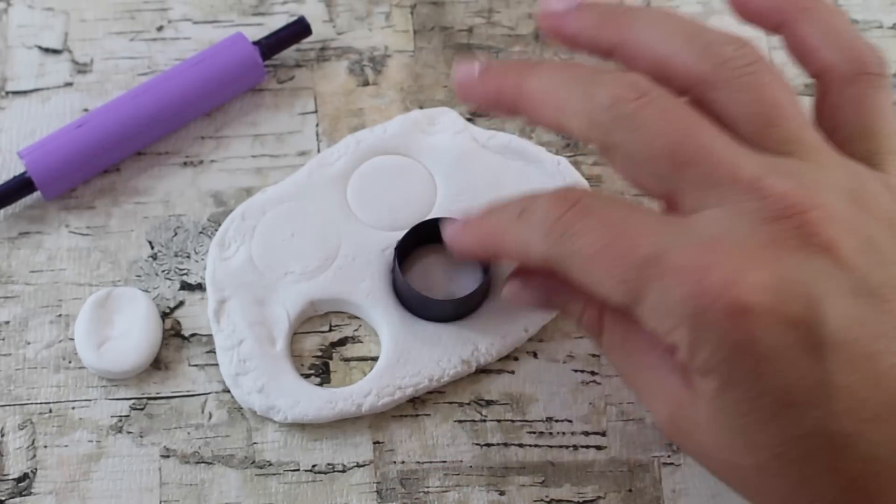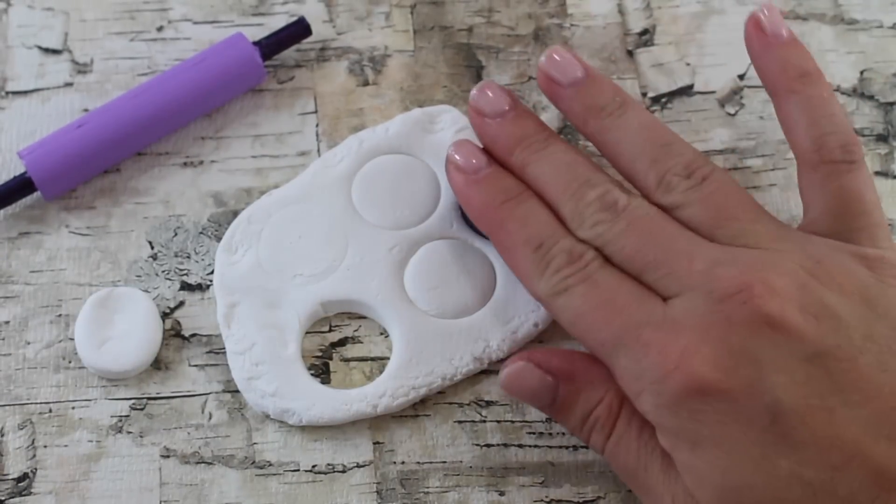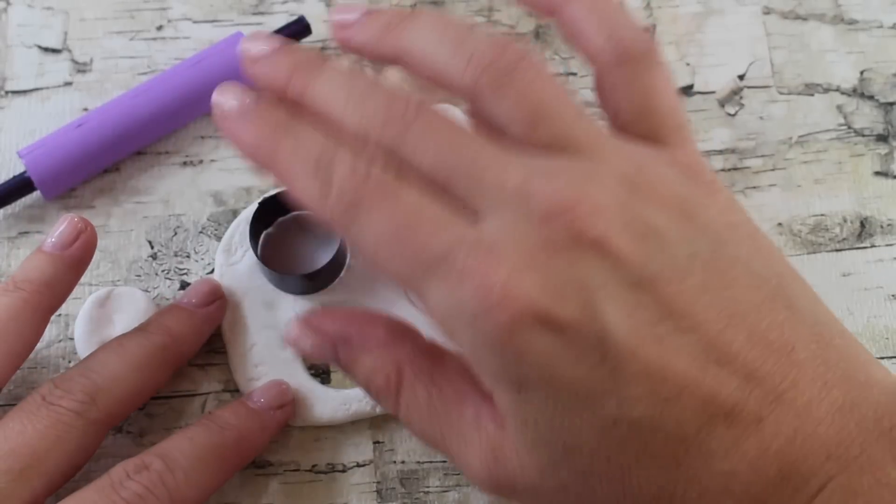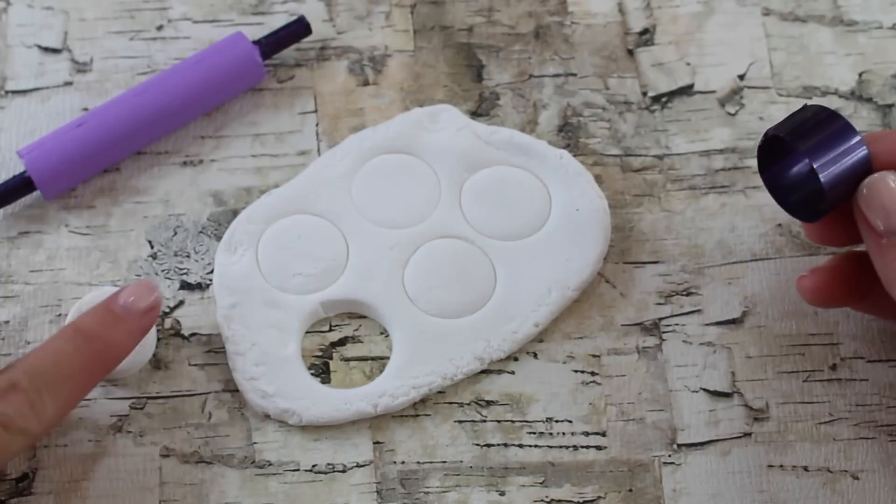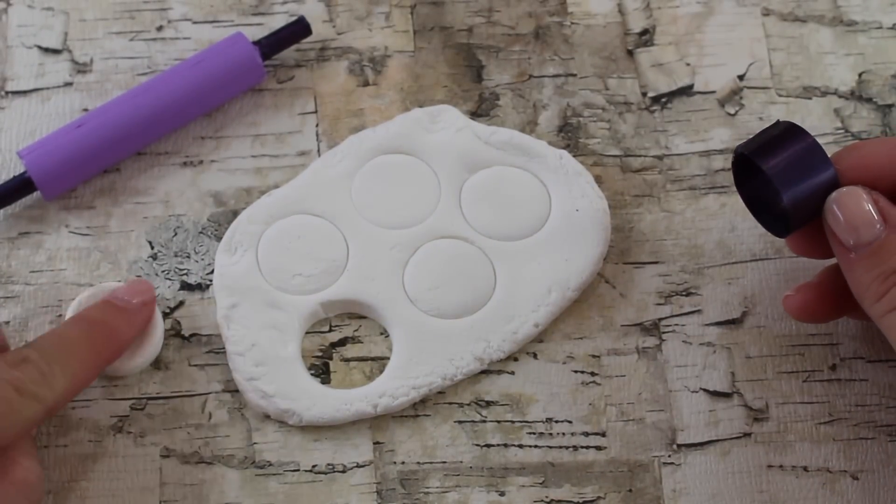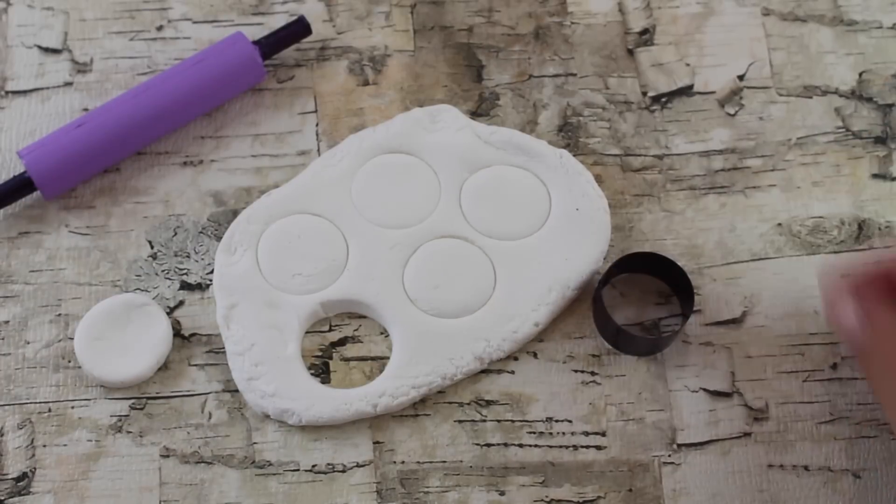Or you can just put impressions like this, like the Our Generation set has. We're going to make a few different options. So we have a whole pastry dough and we have one with cutouts.